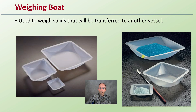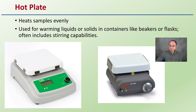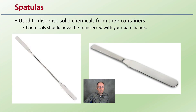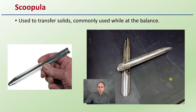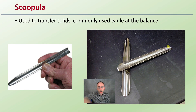A weigh boat is a small plastic container used to transfer substances from one vessel to another. They can be discarded depending on what you're using and are used on balances quite a bit — a great way to keep things nice, neat, and organized. A hot plate heats samples very evenly compared to, say, a Bunsen burner. Some have stirring capabilities and different temperature settings. Spatulas, just like in the kitchen, are used to dispense chemicals from containers. They're flat and used especially for smaller volumes of solids. The scupula, as the name implies, scoops — it has more of a dish shape and can transport higher volumes of solids, with a U shape making it easier to hold larger volumes.